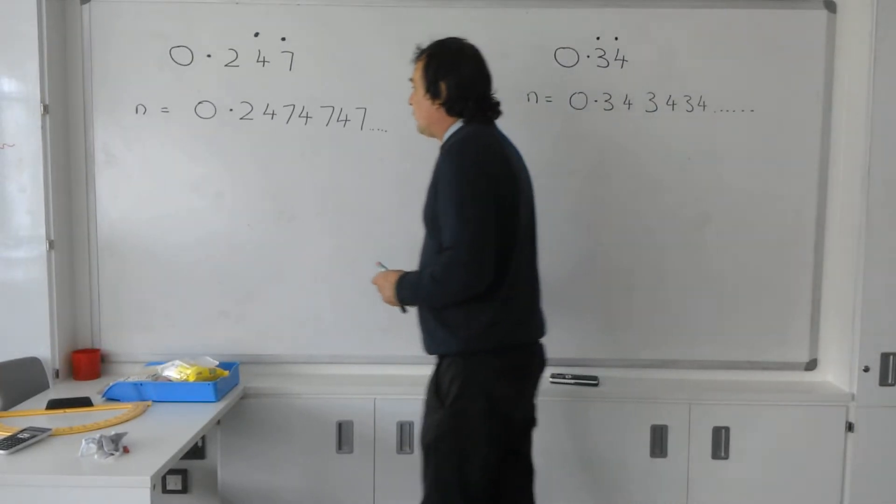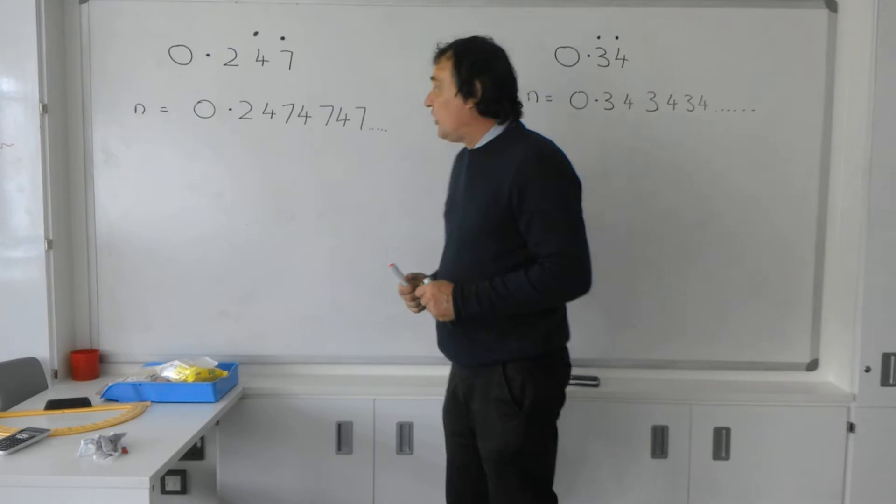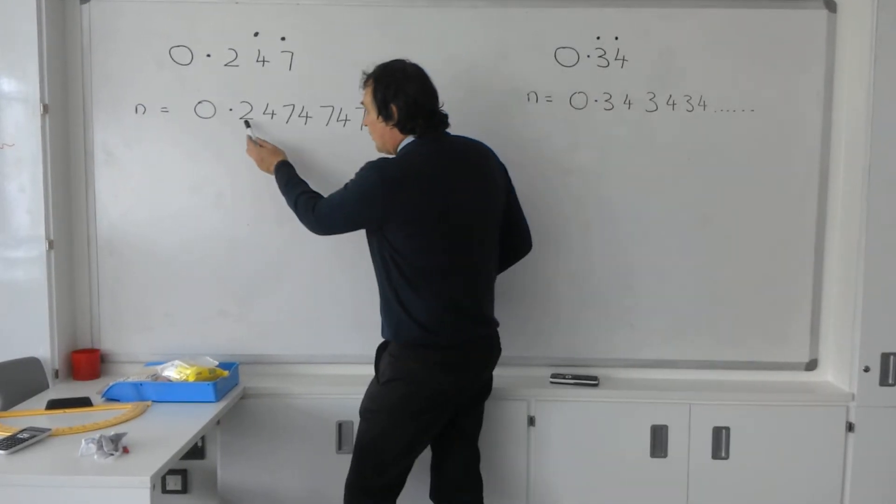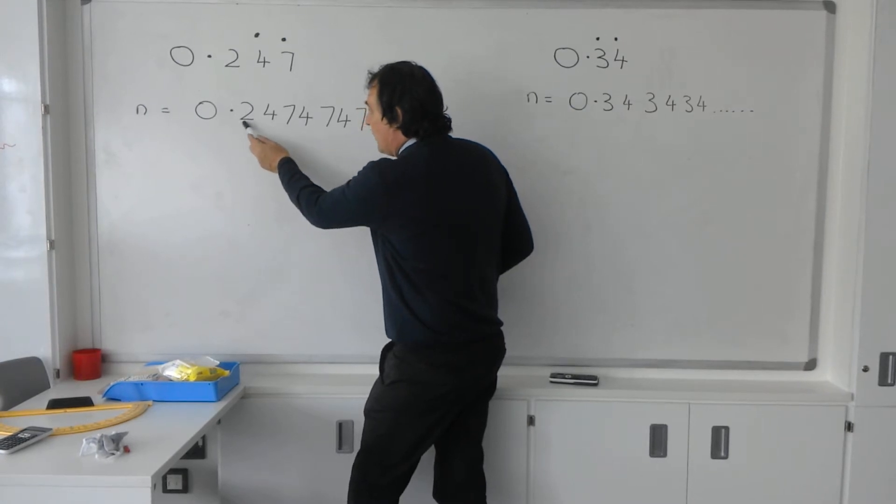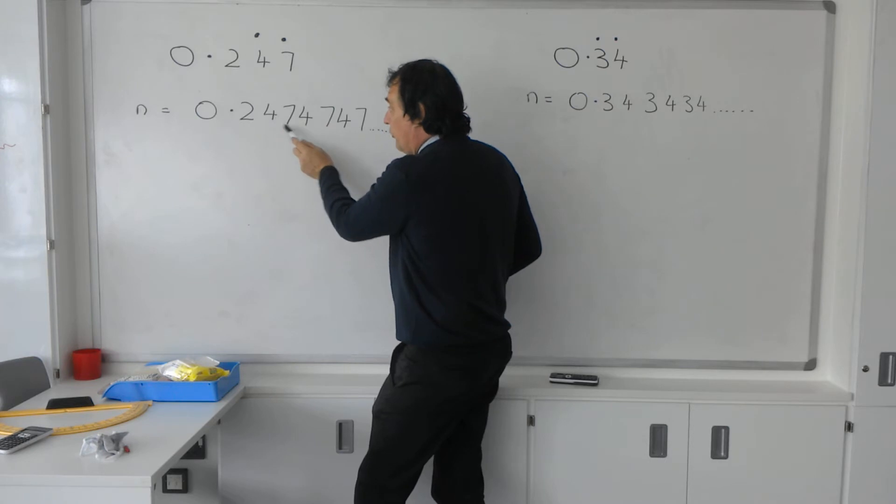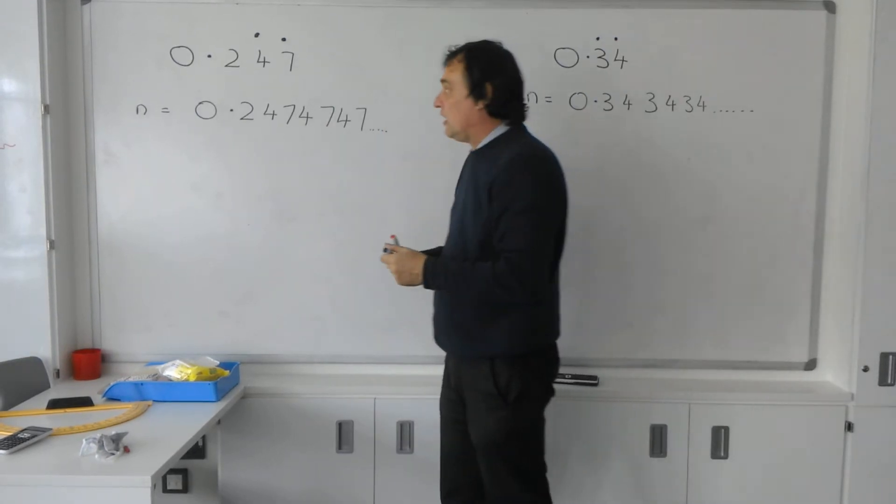The idea with these is we want to get the recurring sequence immediately after the decimal point. As you can see, the recurring sequence isn't quite there yet, because we haven't got 2's there. We've got a 4, 7, 4, 7 starting immediately after that decimal point.